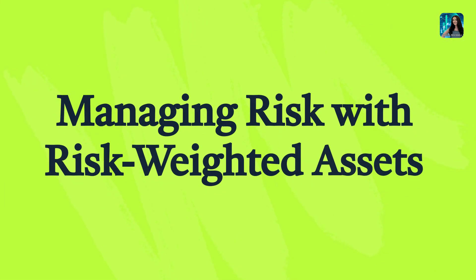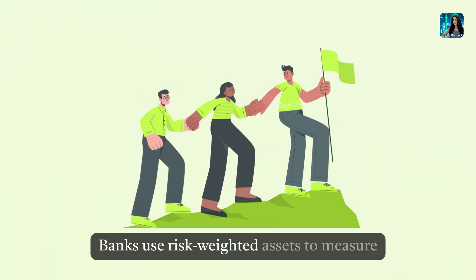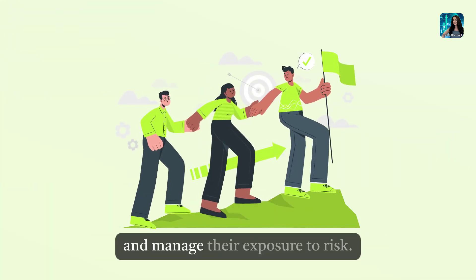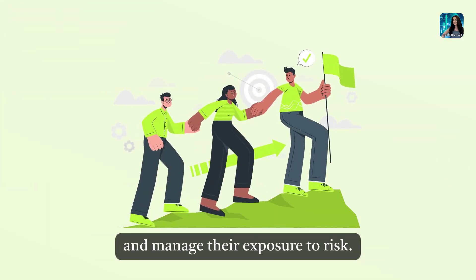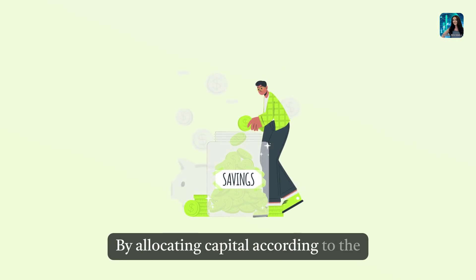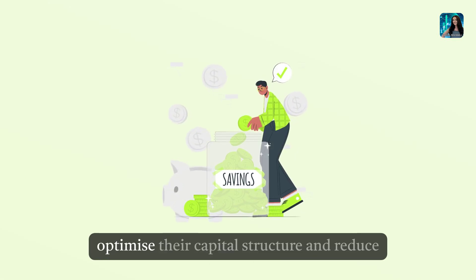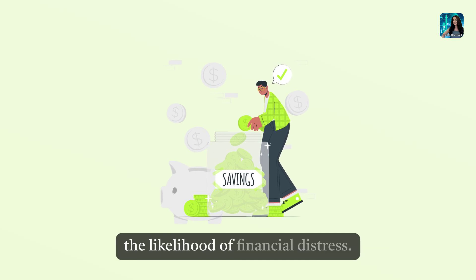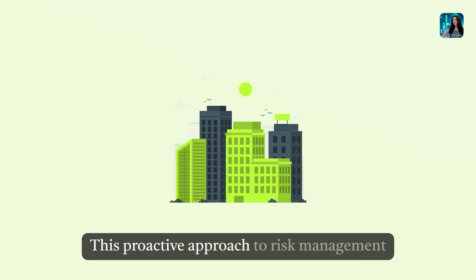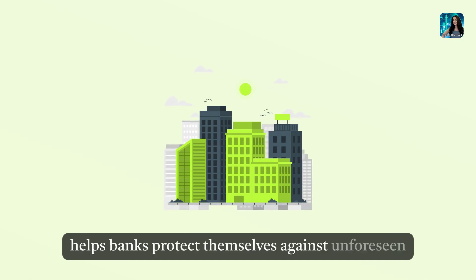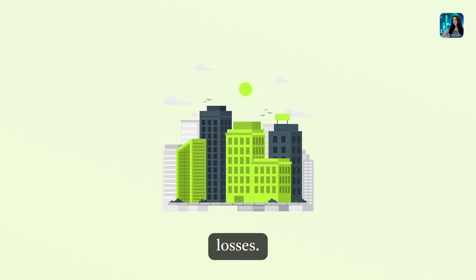Managing risk with risk-weighted assets: Banks use risk-weighted assets to measure and manage their exposure to risk. By allocating capital according to the riskiness of their assets, banks can optimize their capital structure and reduce the likelihood of financial distress. This proactive approach to risk management helps banks protect themselves against unforeseen losses.